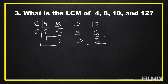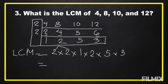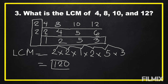There is no common factor between 1, 2, 5, and 3, so we can now find our LCM. We multiply all common divisors and the numbers below: 2 times 2 times 1 times 2 times 5 times 3. Two times 2 is 4, times 1 is 4, times 2 is 8, times 5 is 40, and 40 times 3 is 120. So the LCM, or least common multiple, of 4, 8, 10, and 12 is equal to 120.